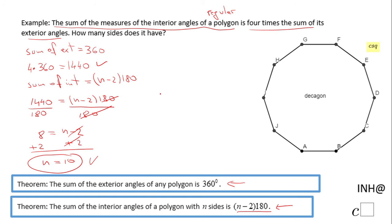This is the polygon for which the sum of the measure of the interior angles is four times the sum of its exterior angles. If you enjoyed this video clip, don't forget to click the like button and come back and see C-Score for more help. Thank you.